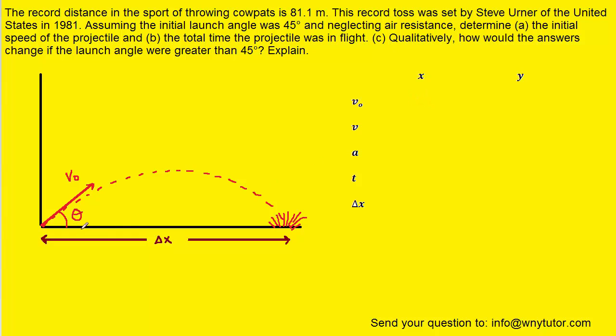For the x component of the initial velocity, if we drew it, it would be pointing to the right in this direction. We can see this component is adjacent to the angle theta, so we use the cosine function. This ends up being V0 times cosine of theta. The y component points straight up and is opposite to theta, so we use sine. We have V0 times sine of theta.